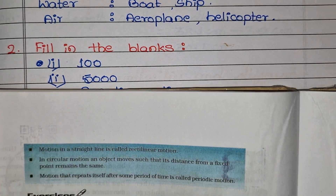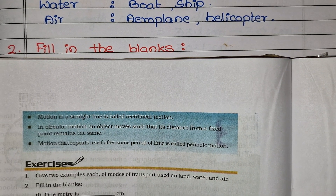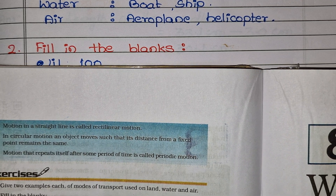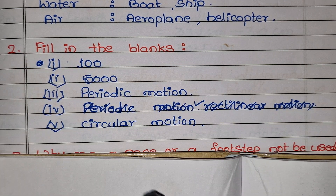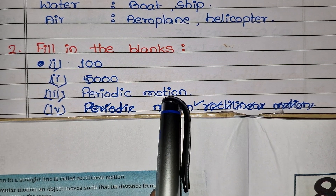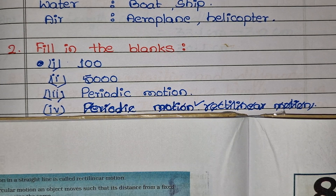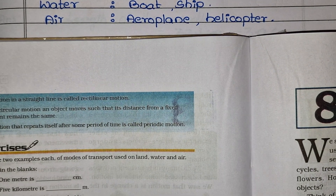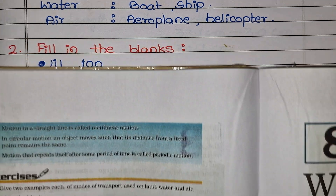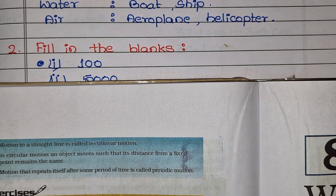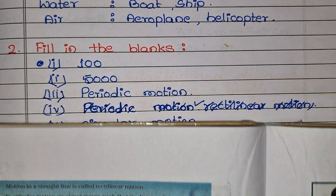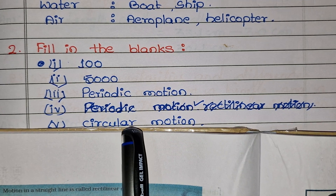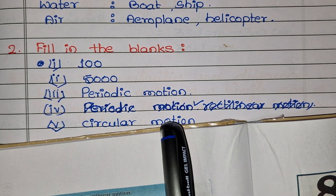The third blank: motion of a child on a swing is periodic motion. The fourth: motion of the needle of a sieving machine is also periodic motion.